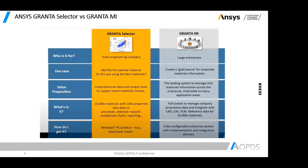In terms of tools to manage our database, we have two: Granta Selector and MI. With Granta Selector, essentially every engineer in a company can use it — whether you're an analyst or a designer. The use cases for Selector include identifying optimal materials, confirming you're using the best material, exploring other options, and comparing materials by price.